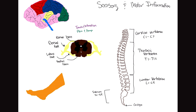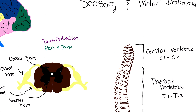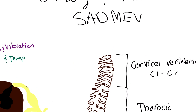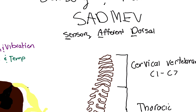We're going to go over a very typical pathway here. What I want you to remember is the abbreviation SAD MEV. It's a stupid abbreviation, but I think it really helps — it's a guy named MEV and I guess he's SAD. What this stands for is: Sensory, Afferent, Dorsal — and Motor, Efferent, Ventral. I'll explain what each of those means.